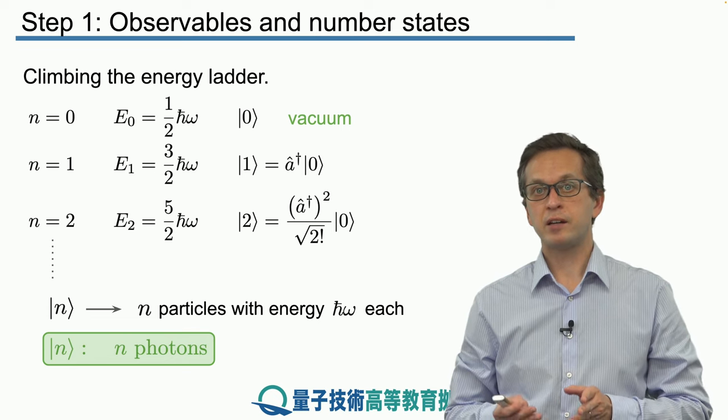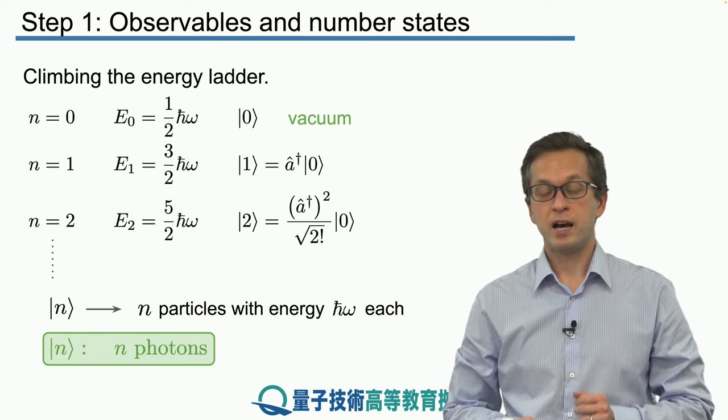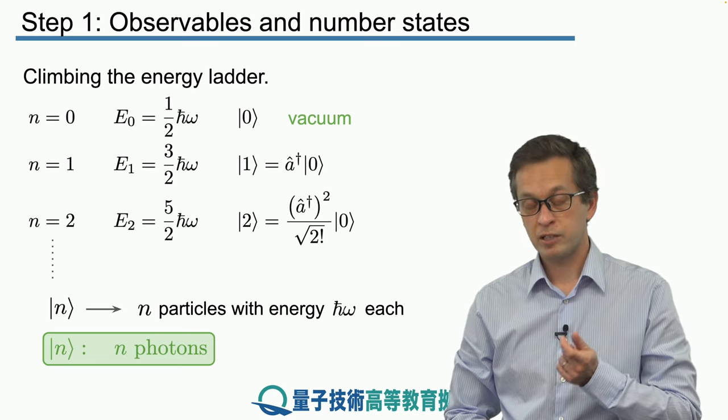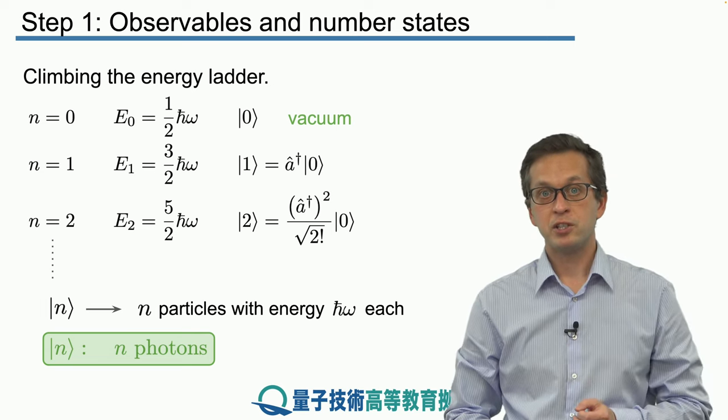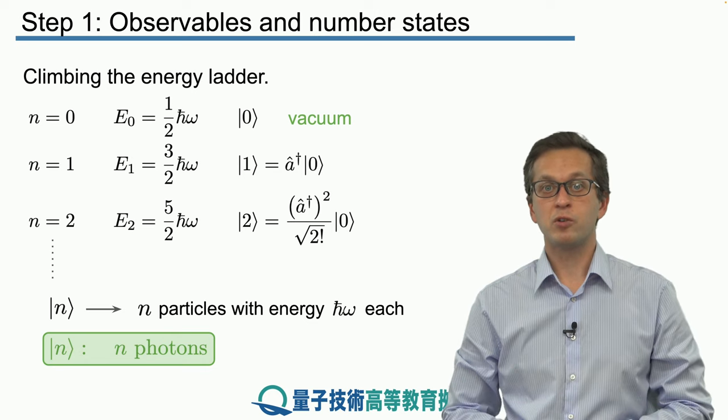This brings us back to the idea Einstein introduced: that the electromagnetic field is quantized and comes in packets of finite energy, which others then called photons.